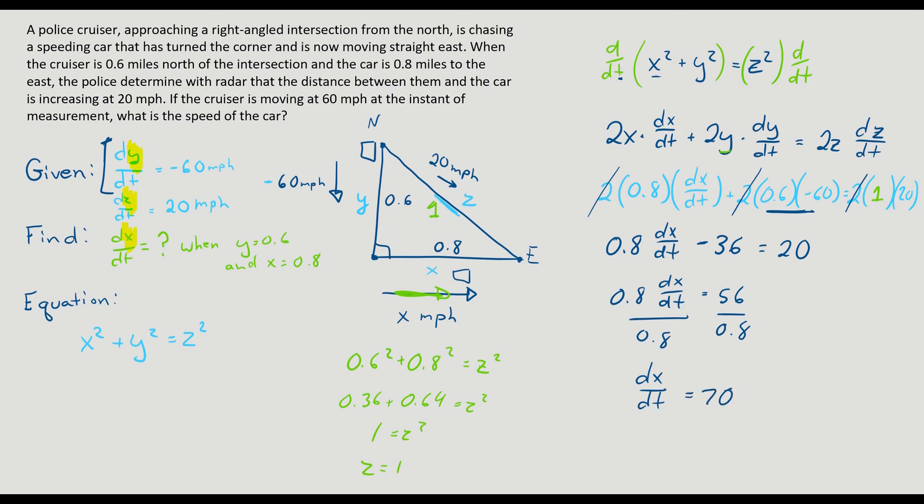70. What does 70 refer to? Well, it's that speed of the car moving away from the police cruiser, 70. And always remember your units. It is 70 miles per hour. That's how the car is moving.